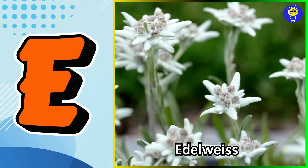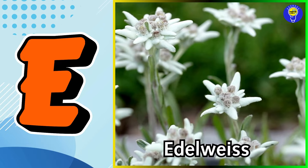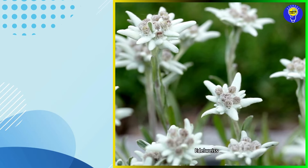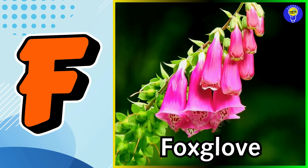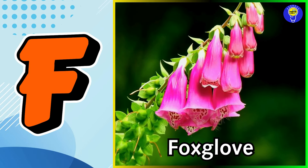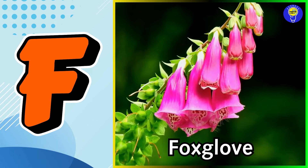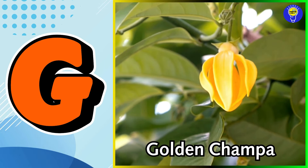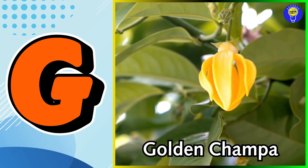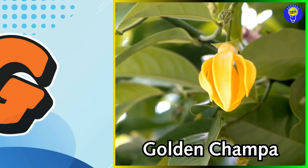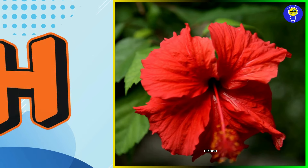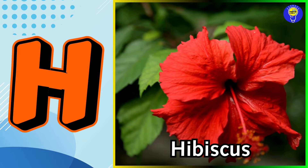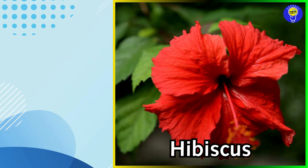E is for Edelweiss flower. Edelweiss flower. F is for Foxglove flower. F, F. Foxglove flower. G is for Golden Champa flower. G, G. Golden Champa flower. H is for Hibiscus flower. H, H. Hibiscus flower.